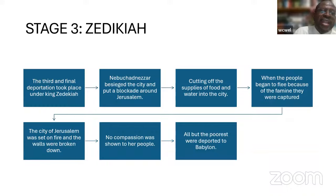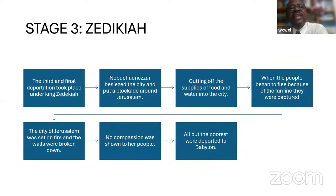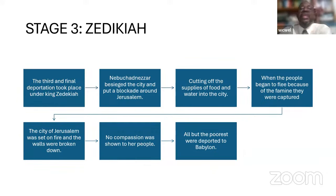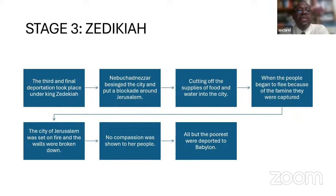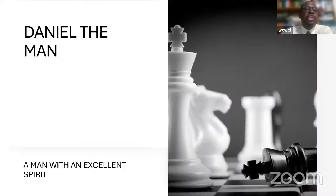The last stage was under King Zedekiah — the third and final deportation. Nebuchadnezzar besieged the city because Zedekiah rebelled, joining with Pharaoh of Egypt. Nebuchadnezzar put a blockade against Jerusalem, cutting off food and water. When people fled from famine they were captured. The city of Jerusalem was set on fire and the walls broken down — no compassion was shown. Only the poorest of the poor were left, which is why when Nehemiah came and saw Jerusalem he wept, for she was in ruin.